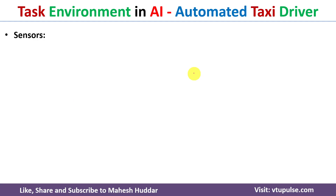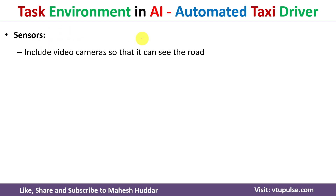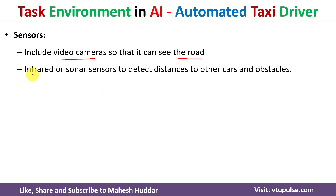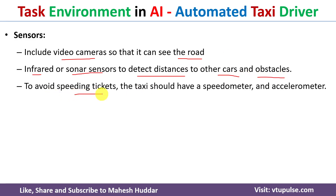The last component of task environment is sensors. The sensors in an automated taxi driver include video cameras so that it can see the road — a set of cameras is required. Infrared or sonar sensors are required to detect the distances of other cars and obstacles. To avoid speeding tickets, the taxi should have a speedometer and accelerometer, as there may be speed limits on roads and the automated taxi driver must detect and control its speed accordingly.